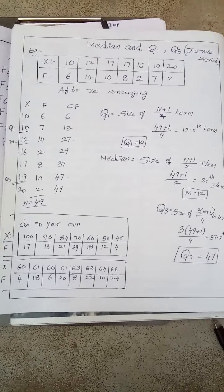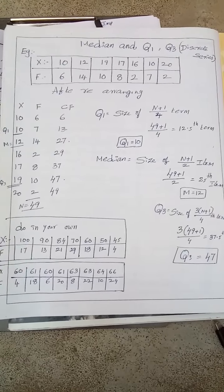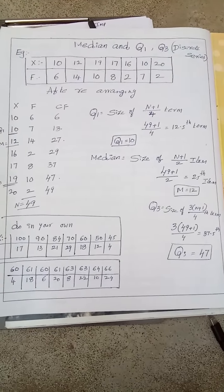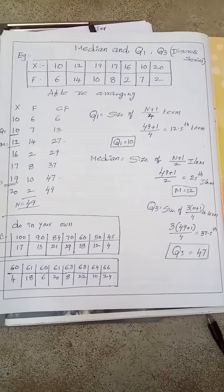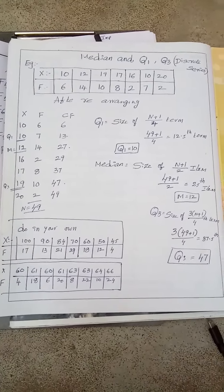Also some practice questions like this, always available to you. Okay, in case of individual and discrete series the formula will be the same. There in case of individual series, n means number. Five times here, n means total of frequency.